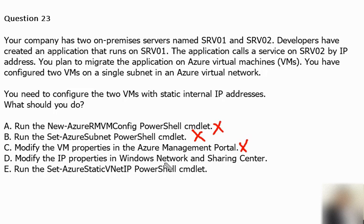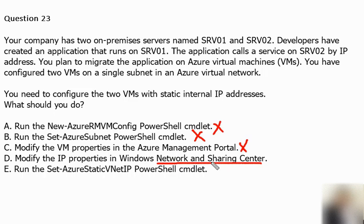Option D is to modify the IP properties in Windows Network and Sharing Center. This is asking us to make the change inside the virtual machine itself. While we can go to Network and Sharing Center in a Windows VM and update the IP, the drawback is that the Azure environment will not be aware of that change. Since the change wasn't made from Azure, Azure won't know the IP address has become static. So option D is also incorrect.